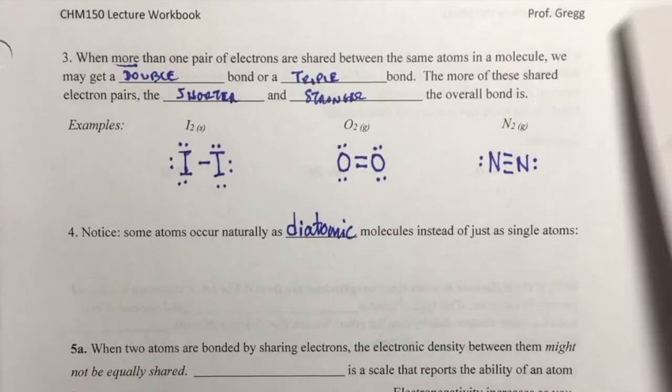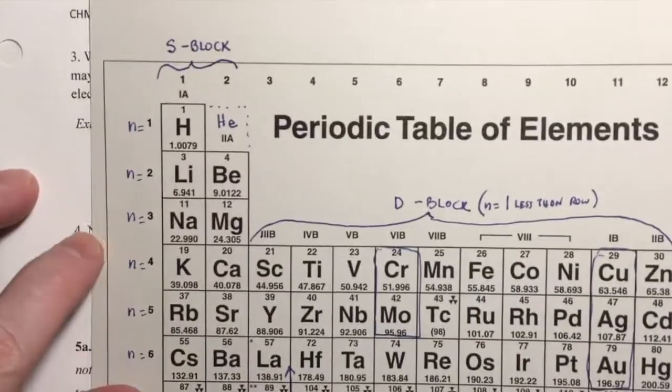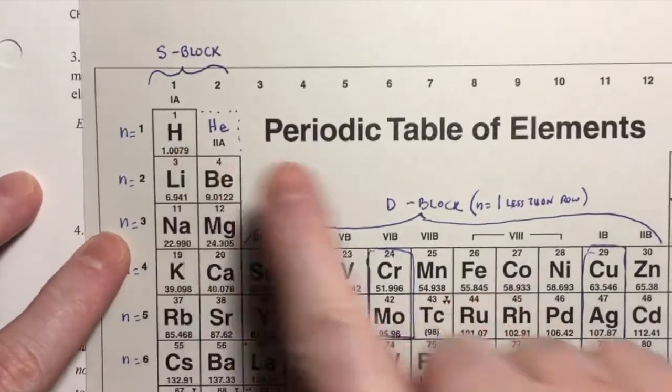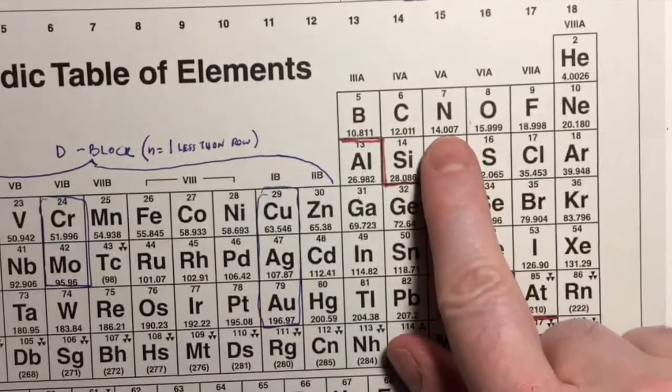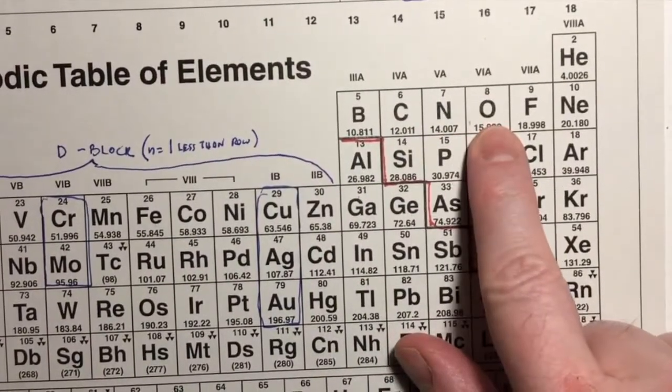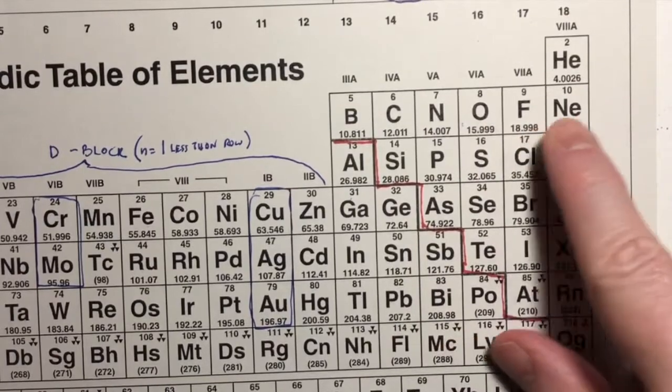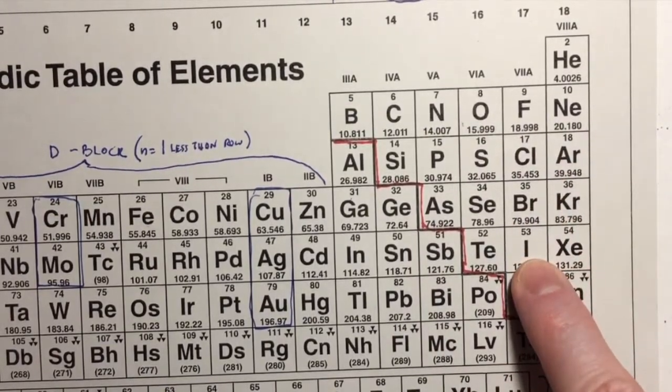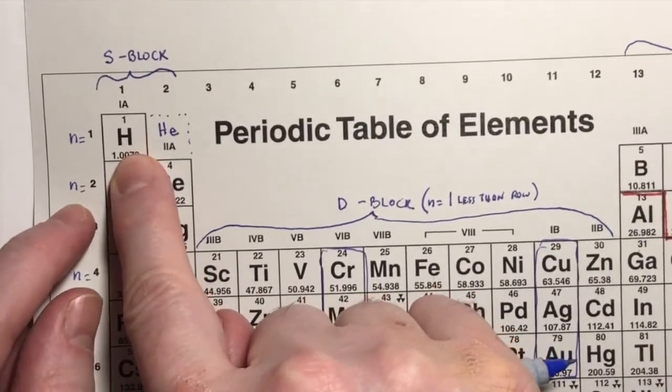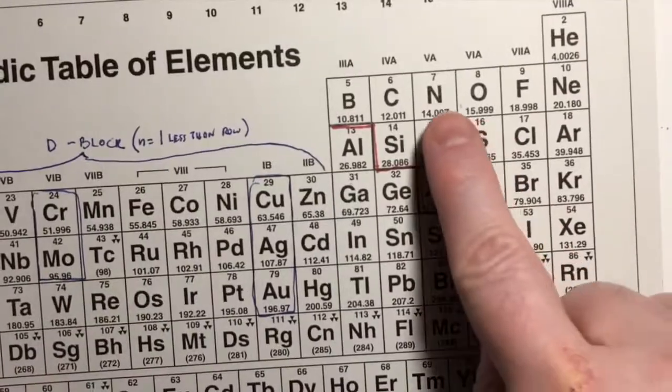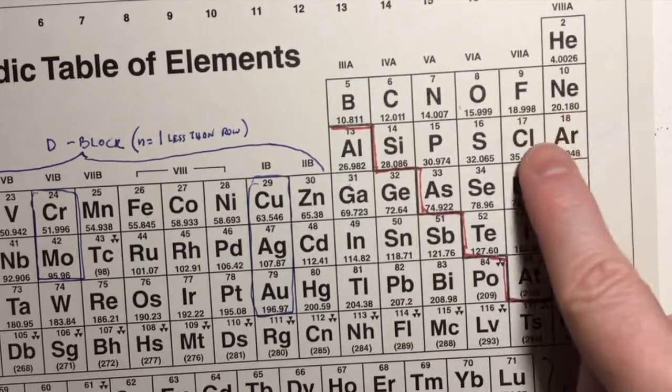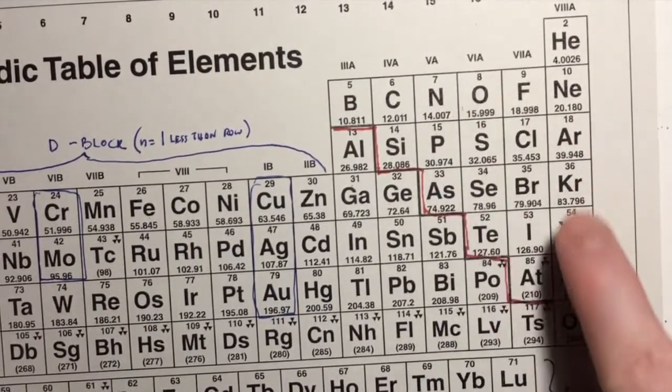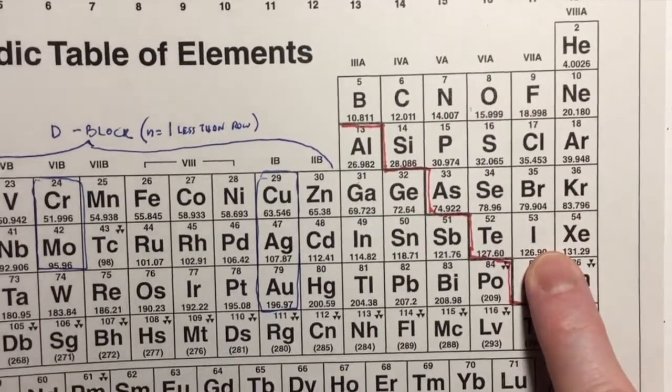There are several elements that occur naturally as diatomic molecules. So here they are: hydrogen, nitrogen, oxygen, and fluorine, chlorine, bromine, and iodine. We've got hydrogen gas that occurs as H2, nitrogen, oxygen, fluorine, chlorine, bromine, and iodine, all of which occur as diatomic molecules.